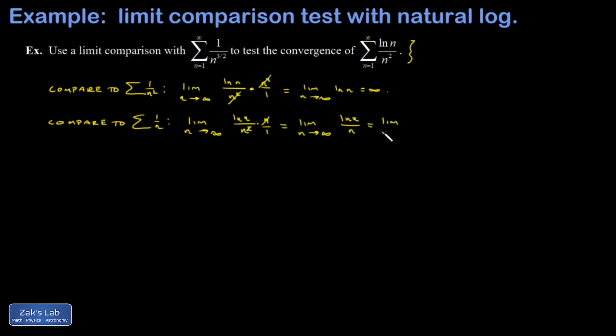Quick technicality here, I'm about to use L'Hopital's rule, so I better say this is equal to the limit of the same function on the real numbers instead of the integers. Now I can take the derivative of the top and bottom, and I get 1 over x over 1. And when I take the limit as x goes to infinity, I get 0.